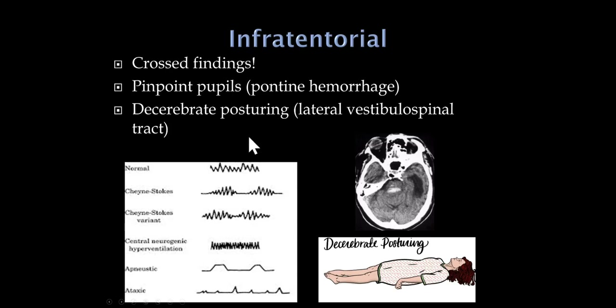The highest-yield infratentorial lesion causing coma is a pontine hemorrhage. These patients have bilateral Horner's syndrome — all descending sympathetics are knocked out — resulting in pinpoint pupils.